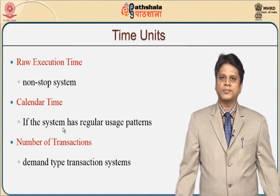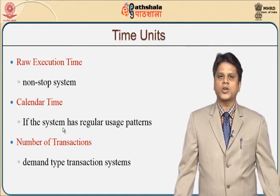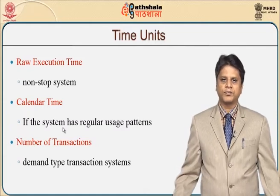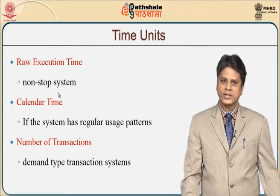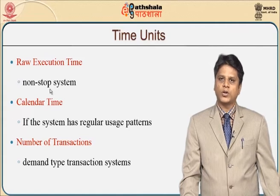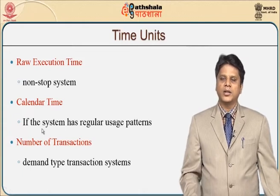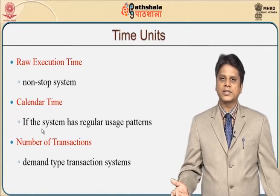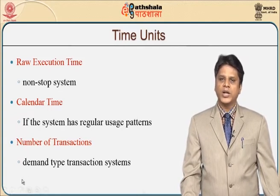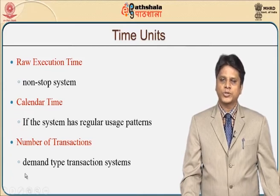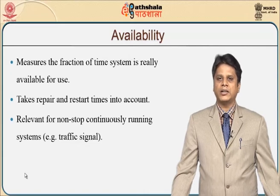We try to understand various time units because calendar time is also an important component for understanding the failure free operation of software. Raw execution time is nothing but a non-stop system — most servers run 24 by 7 by 365. Those are computed to have raw execution time. Calendar time is where we follow a regular usage pattern, after which there will be appropriate maintenance. Not only that, the system has to look for the number of transactions — whenever demand arises, we may have to project only those types of transactions into its operation. We have looked at availability as a metric by use of MTBF and MTTR.